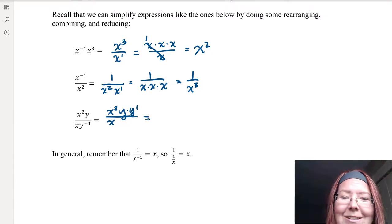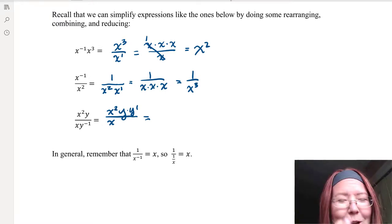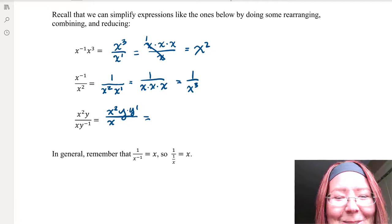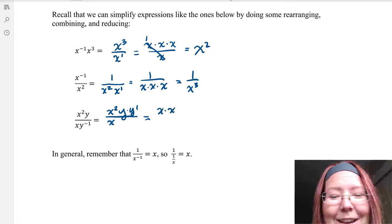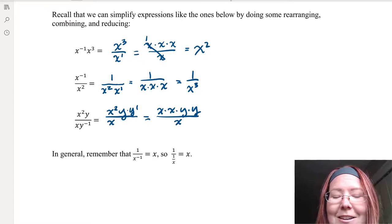Now we have x squared times y times y to the first over x. I'm going to write it all out first. That's really x times x times y times y in the numerator, and just an x in the denominator.